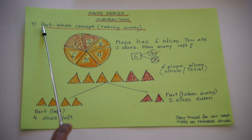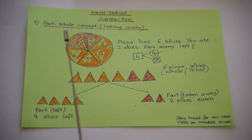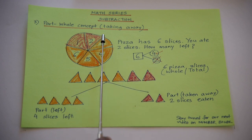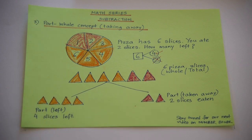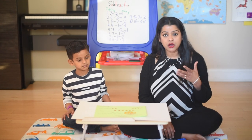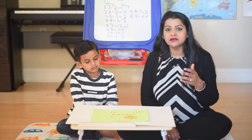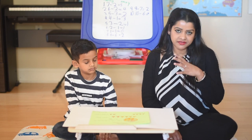Now let's understand subtraction with the part-whole concept. This is a pizza with six slices. You're hungry and you ate two slices. So how many are left? Four. That's taking away from the whole — that's subtraction. The subtraction number sentence is six minus two equals four. The part-whole concept is actually more about number bonds. Stay tuned for later videos where we learn about number bonds and see how we can learn addition and subtraction even more effortlessly and simultaneously.